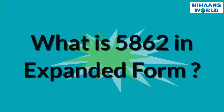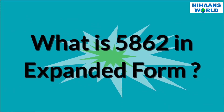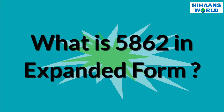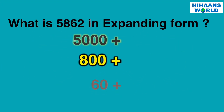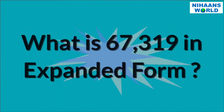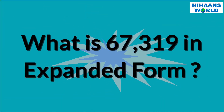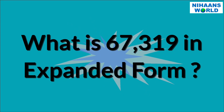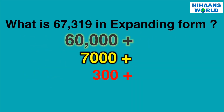Let's practice. What is 5,862 in expanded form? 5,000 plus 800 plus 60 plus 2. Here is another example: what is 67,319 in expanded form? 60,000 plus 7,000 plus 300 plus 10 plus 9.